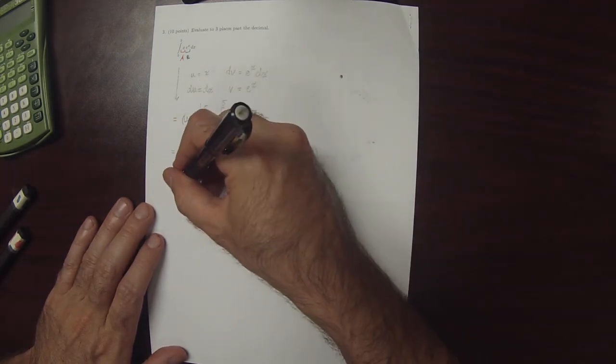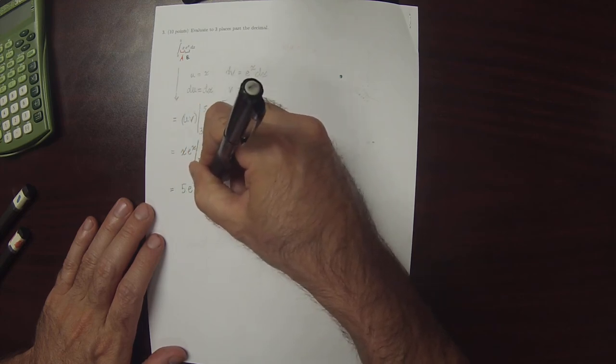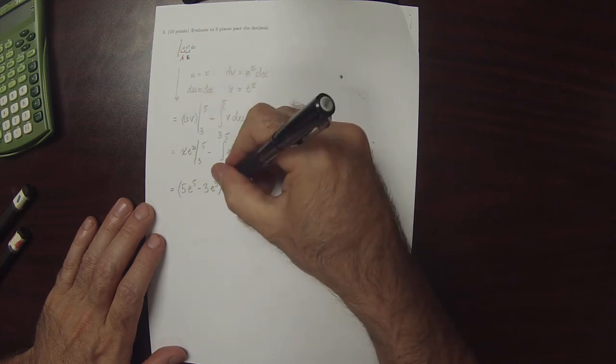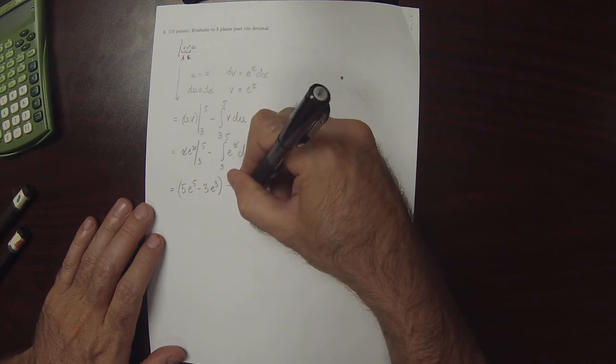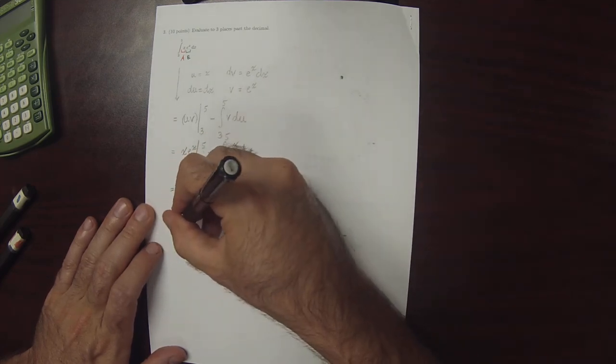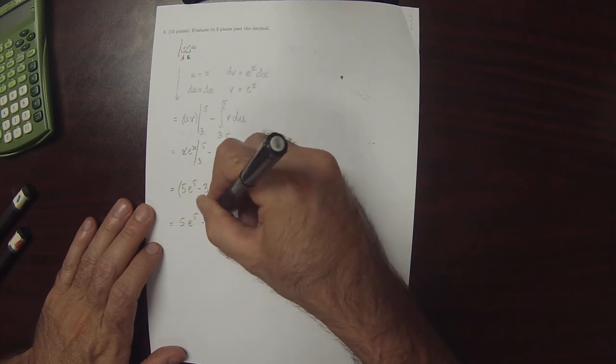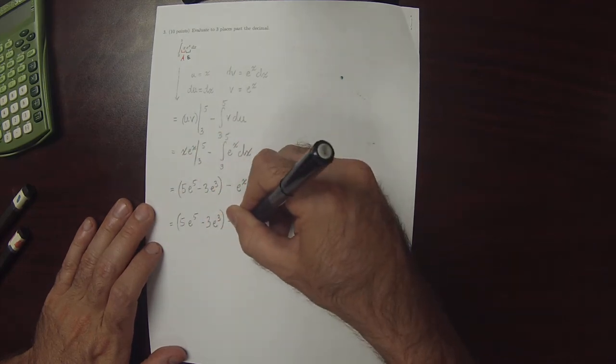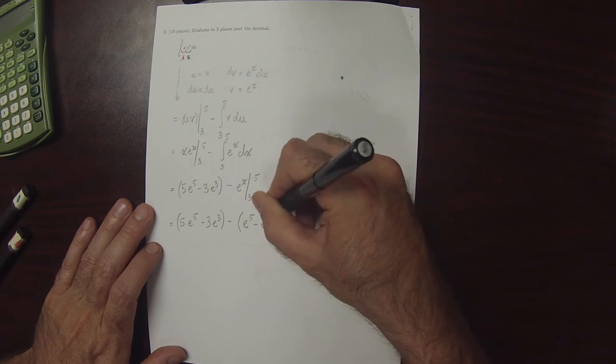So evaluating this, this will be 5 e to 5 minus 3 e to 3. So that's this. Then minus e to x evaluated from 3 to 5. So that will be 5 e to 5 minus 3 e to 3 minus e to 5 minus e to 3.